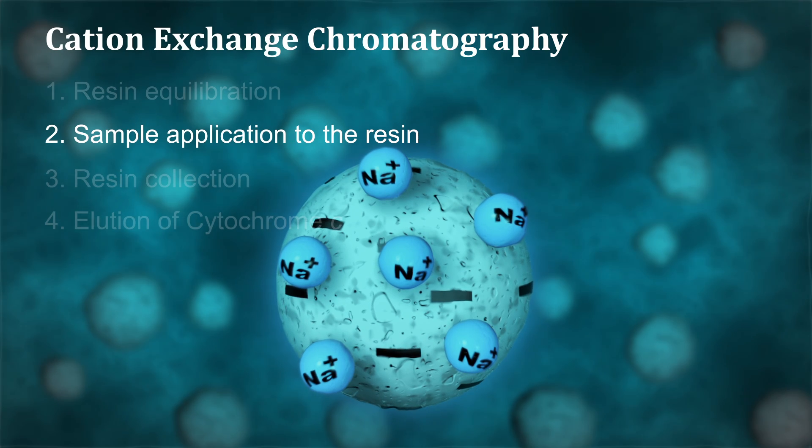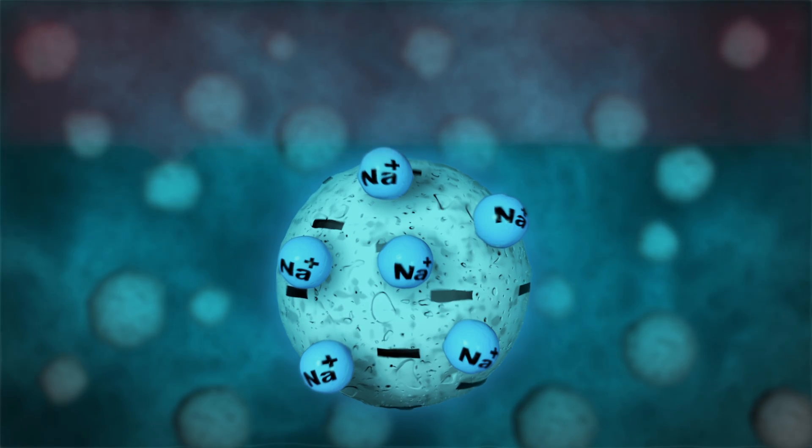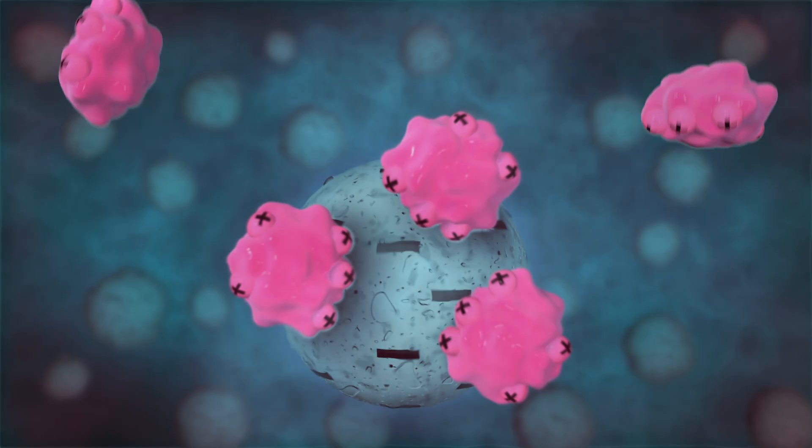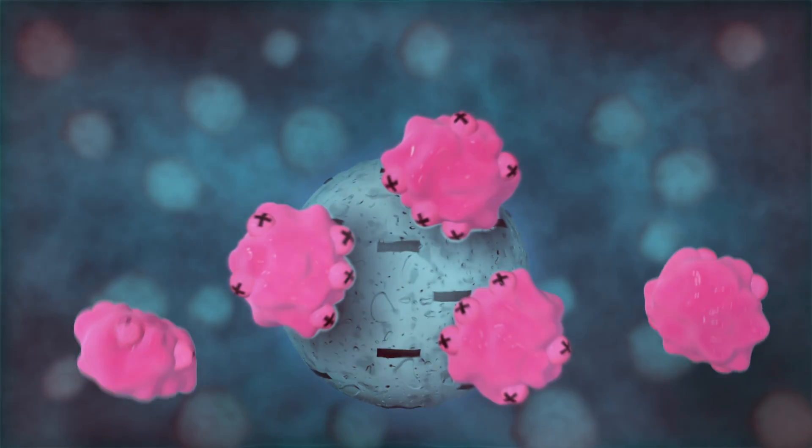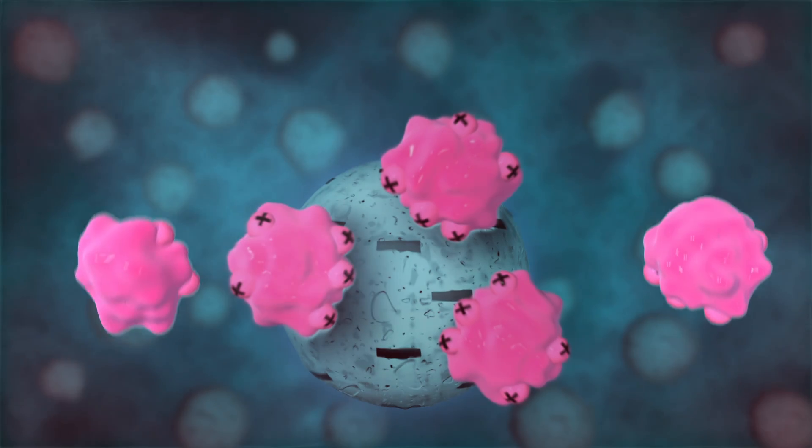Sample application to the resin: The negatively charged resin will bind cytochrome-C while the sodium counter ions are displaced. In this way, cytochrome-C is concentrated on the resin.